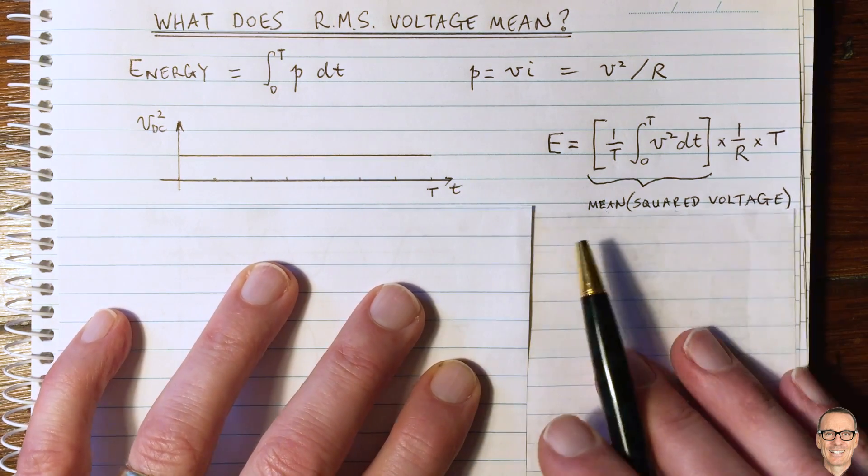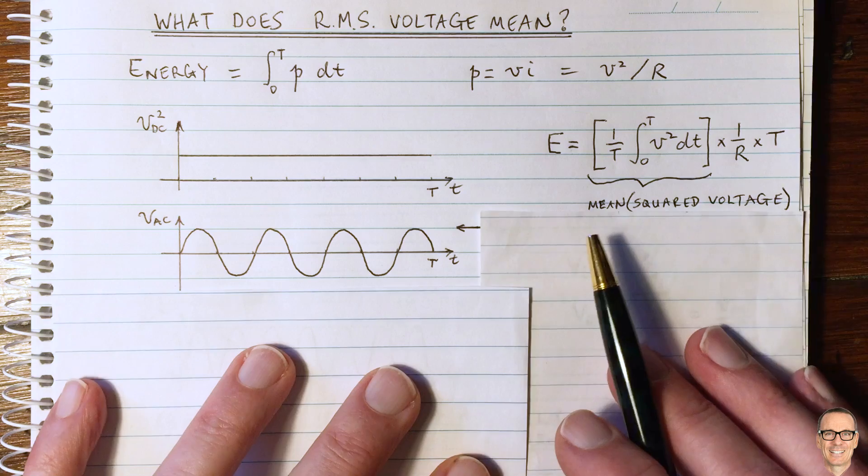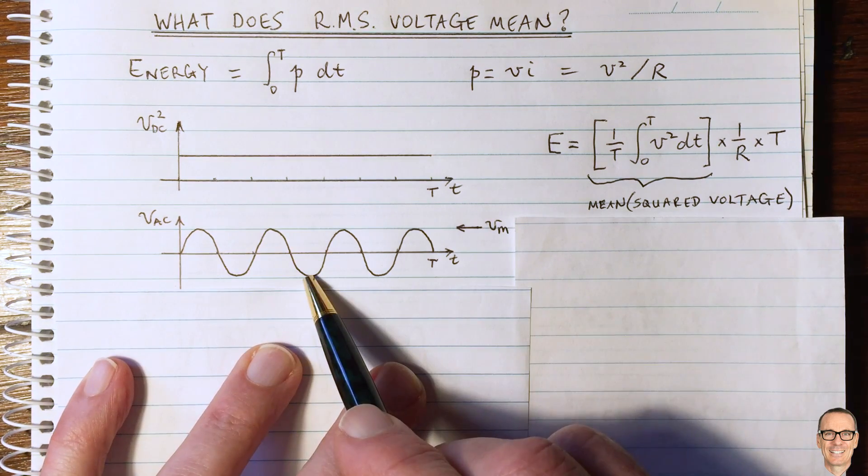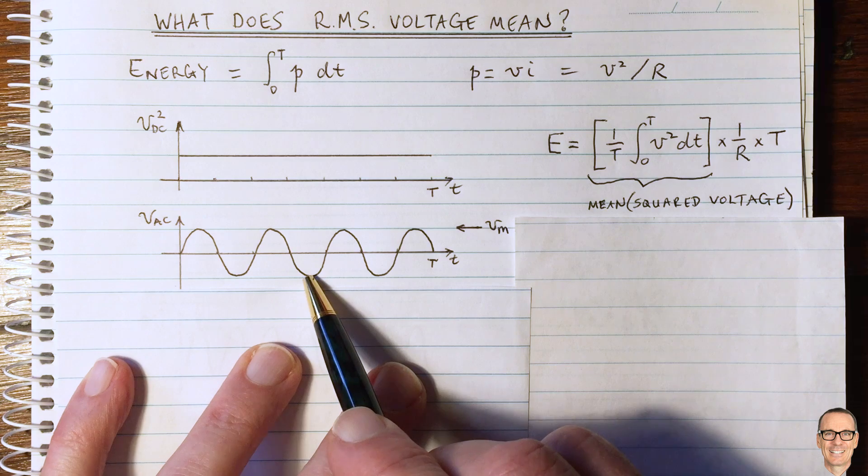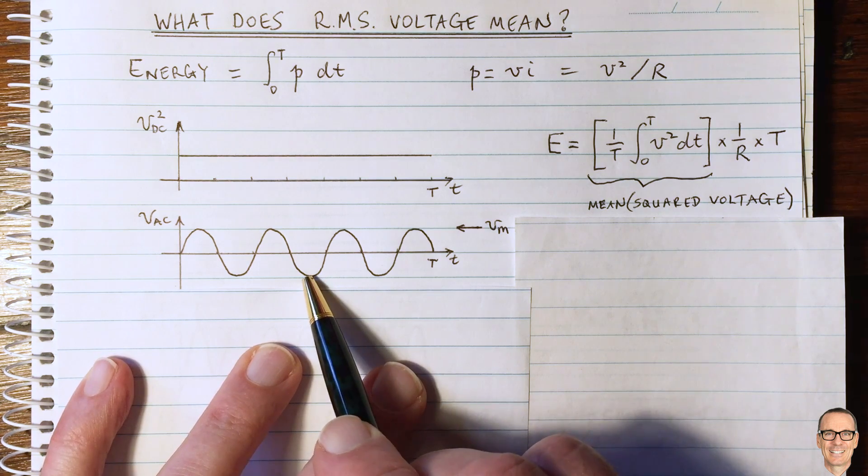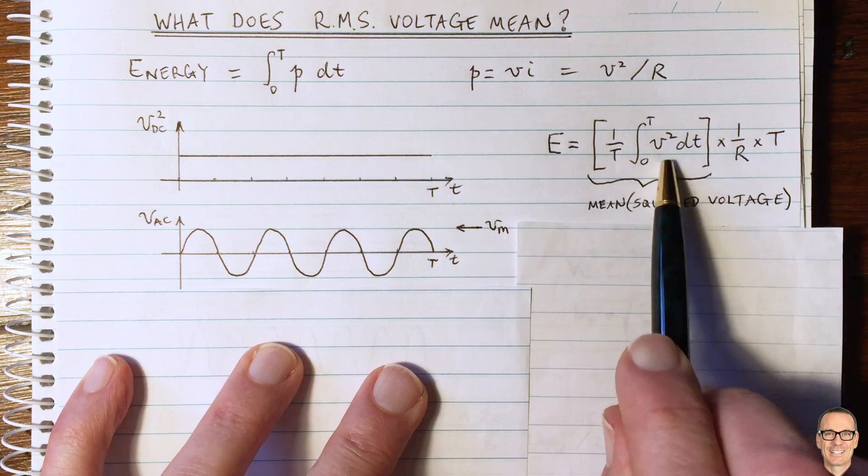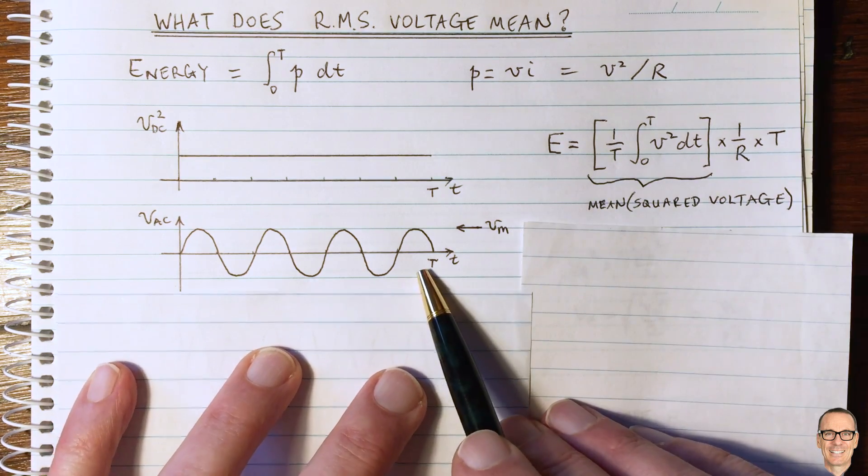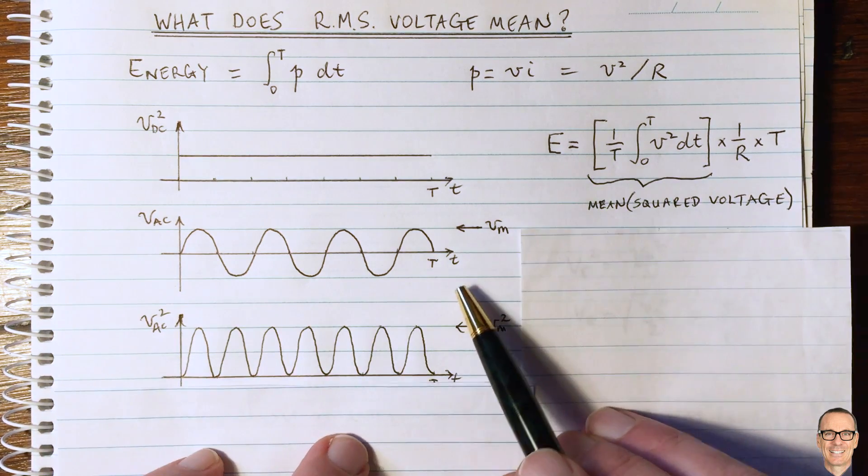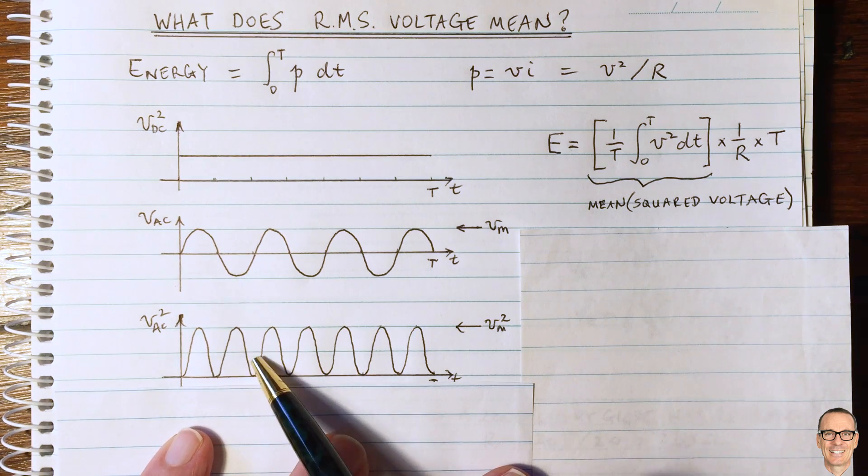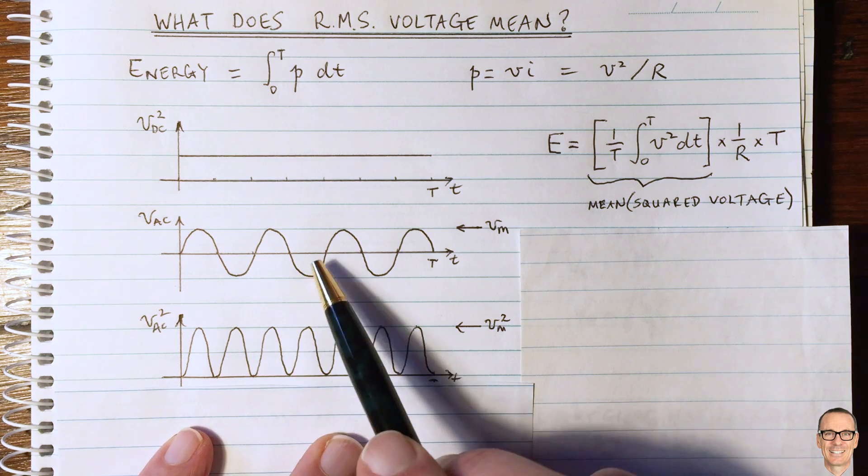Let's think about the alternating current situation. That's when the voltage varies as a sinusoidal waveform, like the power supplies in wide area distribution power networks. So here I've drawn the voltage as the sinusoid. But of course, we need the square of the voltage. So here I've drawn the square of the voltage. And it also has a sinusoidal shape. And you can confirm that for yourself with some basic trigonometric expressions.